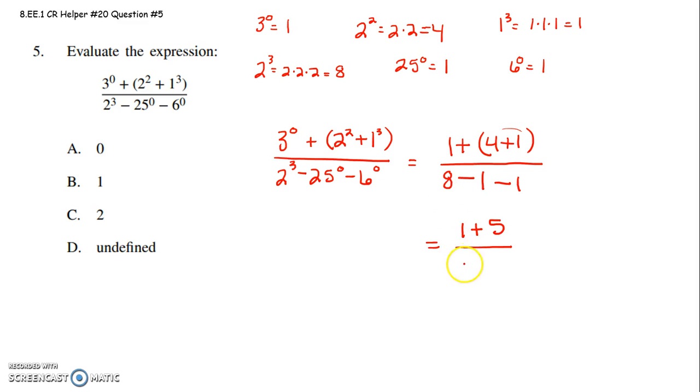Then on the bottom, I have 8 minus 1 minus 1. Okay. Numerator, I'm going to get a single value in the numerator. 1 plus 5 is 6. 8 minus 1 is 7 minus 1 more is 6.